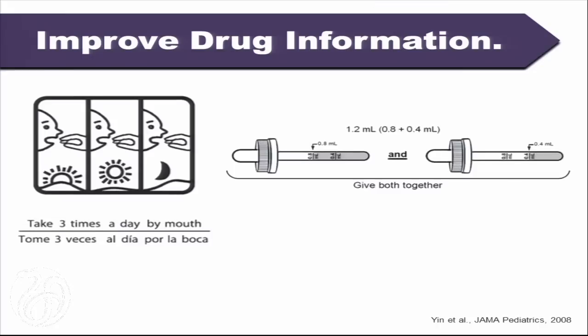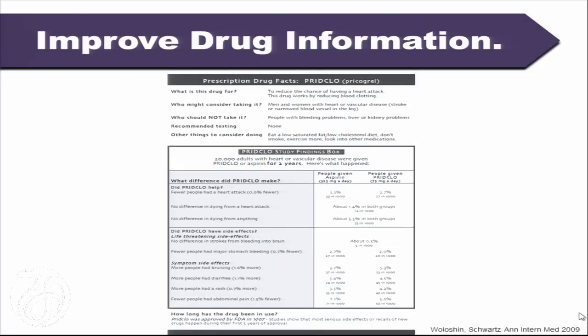Another area: some great work going on at NYU — using icons, especially in the case of devices like syringes and cups — can be incredibly powerful and have a wonderful effect, published now in JAMA Pediatrics. One thing also in the drug space is use of a standard medication prescription drug facts box. This is a little bit controversial and was not passed through the FDA Risk Communication Committee, but it tries to both quantify and qualify risk simultaneously, and it is still kind of being vetted.